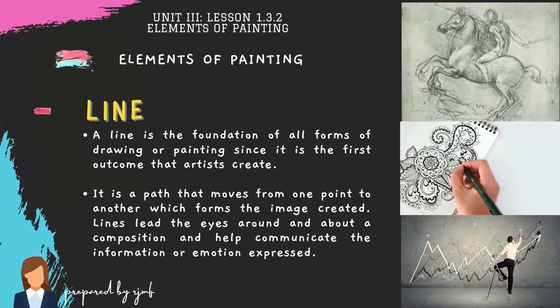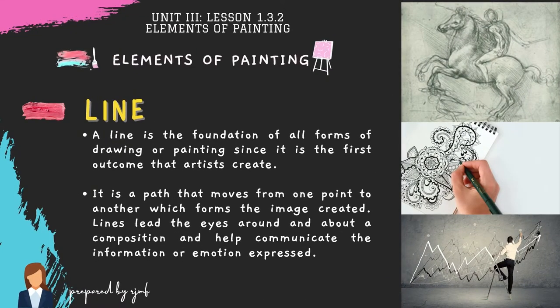Another element is line. A line is the foundation of all forms of drawing or painting, as it is the first outcome that artists create. It is a path that moves from one point to another, forming the image created. Lines lead the eyes around a composition and help communicate information or emotion. They can be vertical, horizontal, curved, or diagonal.